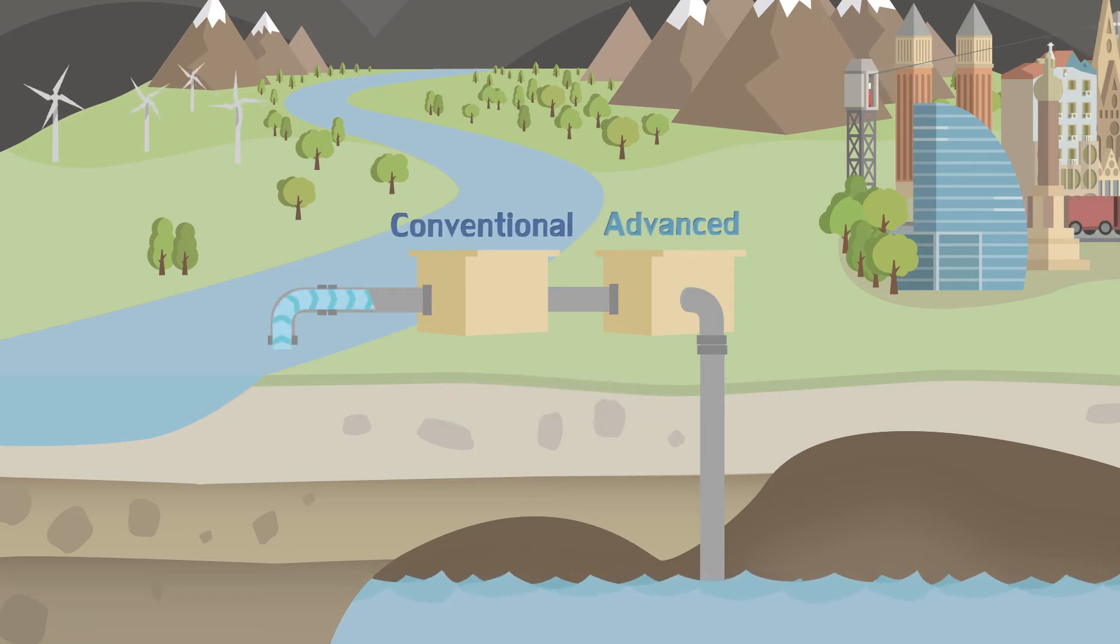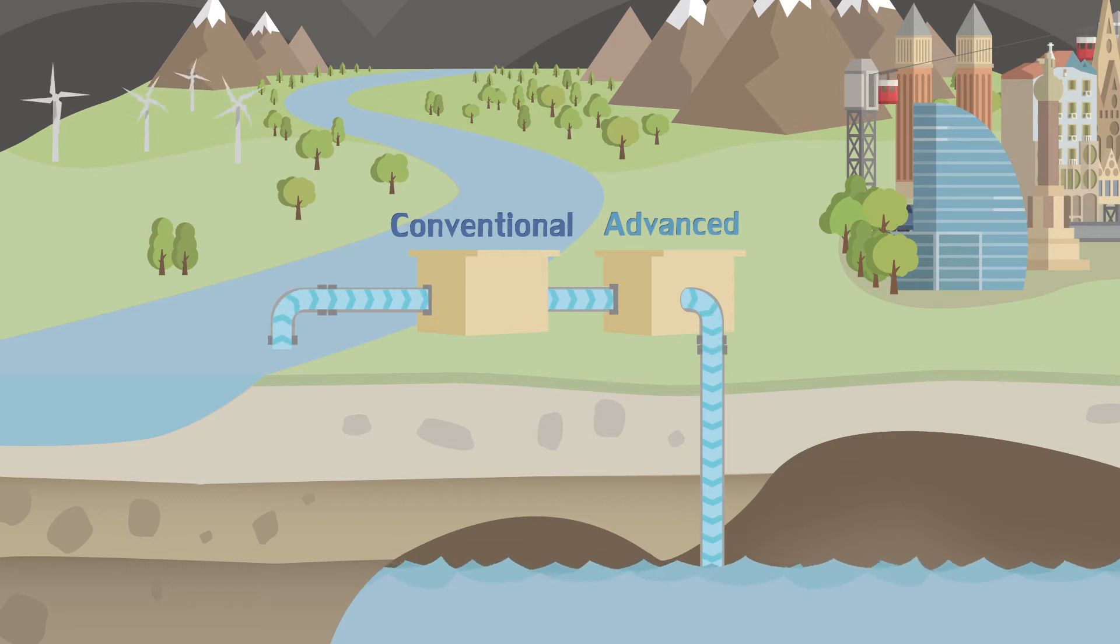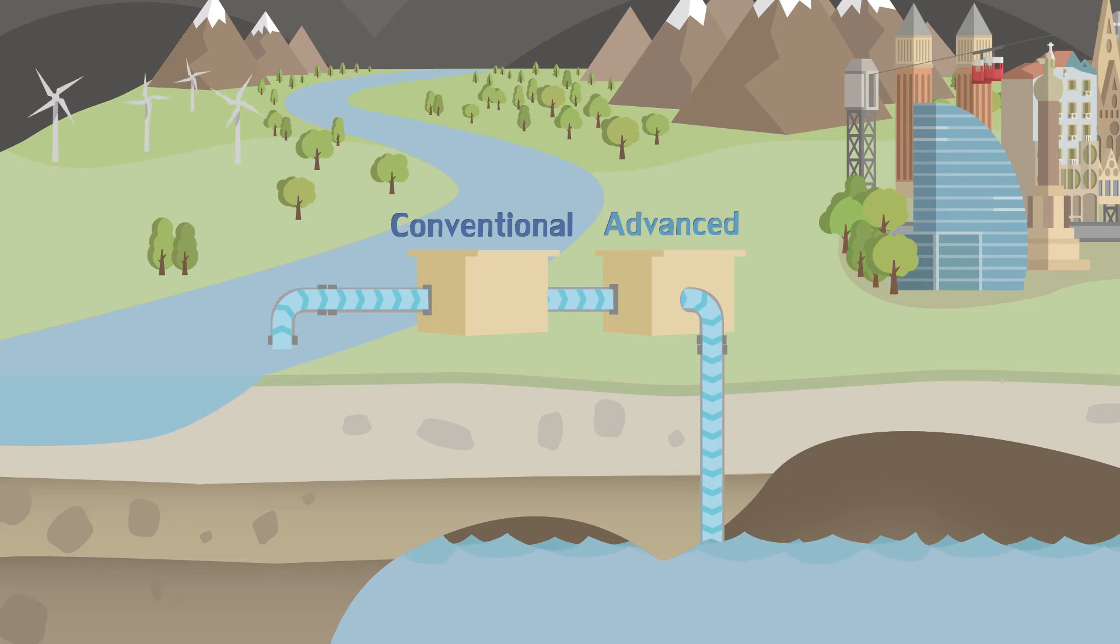Currently, the water injected into the Llobregat aquifer is a suitable quality for human consumption. It is taken from the Llobregat river and undergoes conventional and advanced treatment before injection.